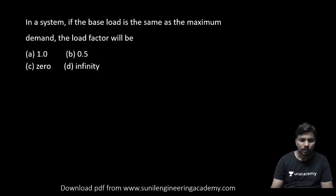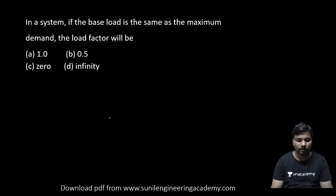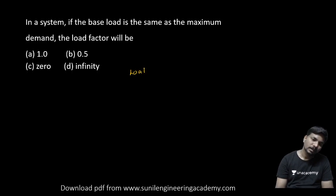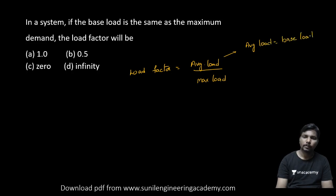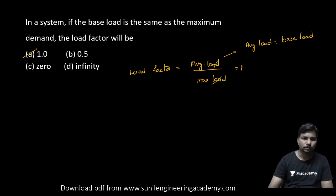Next: in a system, if the base load is the same as the maximum demand, the load factor will be what? Load factor equals average load divided by maximum load. Here average load equals base load, and if base load equals maximum demand, then both numerator and denominator are equal — so the load factor will be 1.